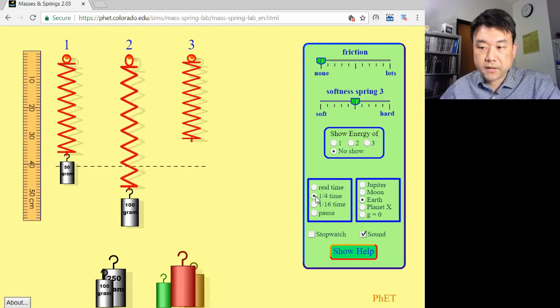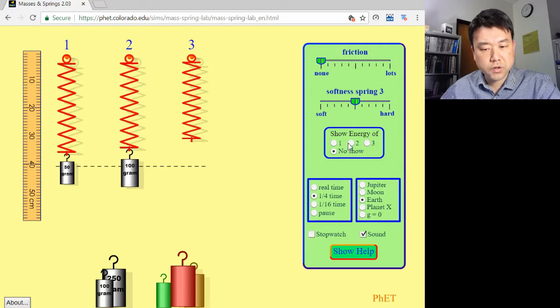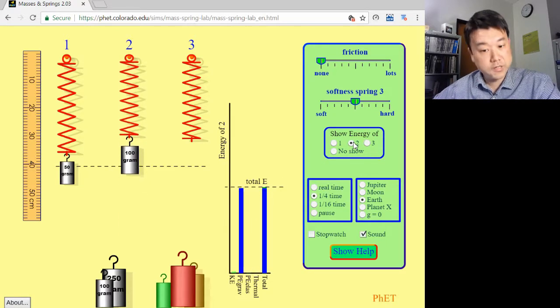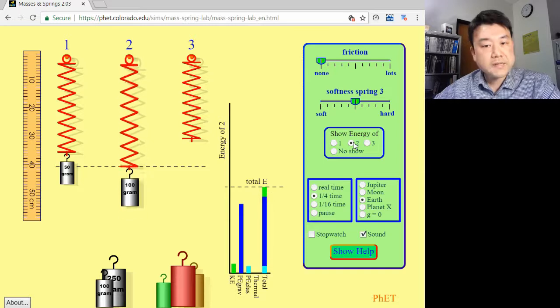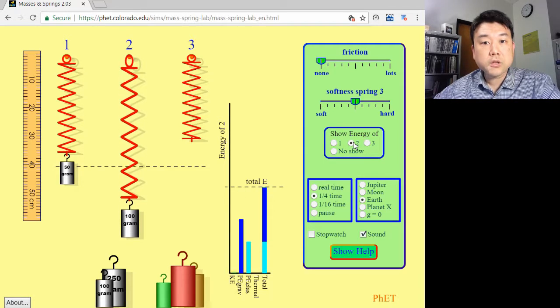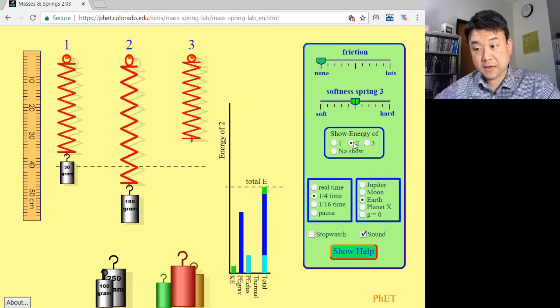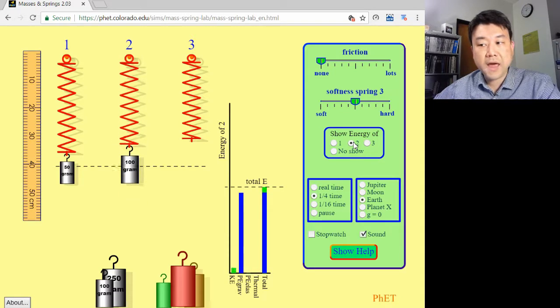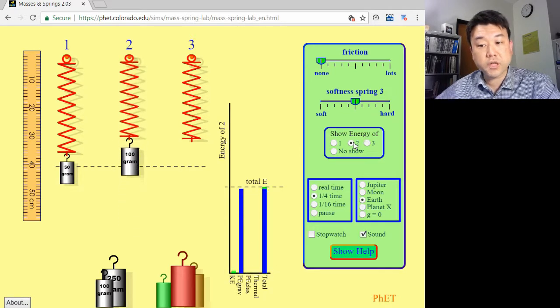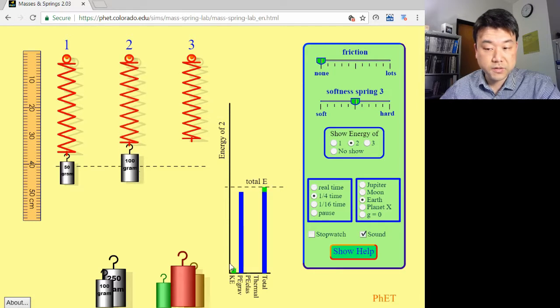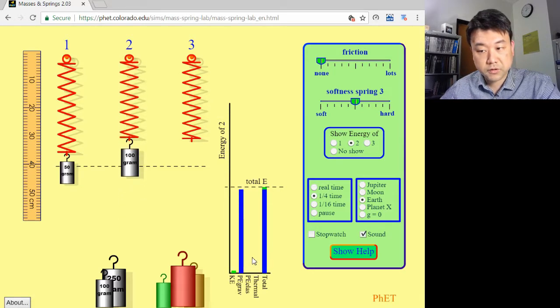You could look at this as an illustration of conservation of energy. Over many cycles of oscillation, the total energy remains the same. The only thing that happens is that the energy sloshes back and forth between kinetic energy and the total potential energy.